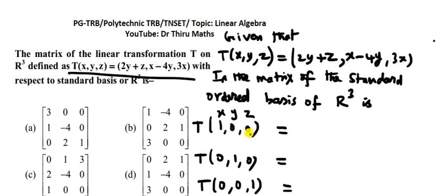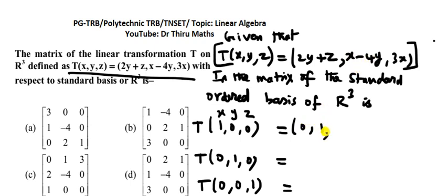Now compute T(1, 0, 0): substitute x=1, y=0, z=0. For 2y + z: 2 into 0 plus 0 equals 0. For x − 4y: 1 minus 4 into 0 equals 1. For 3x: 3 into 1 equals 3. So T(1, 0, 0) = (0, 1, 3).